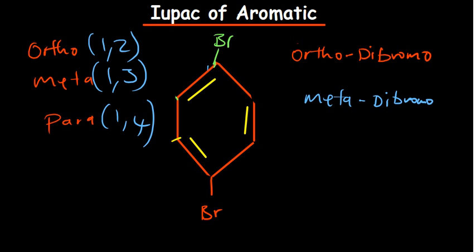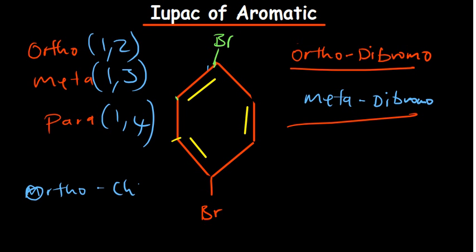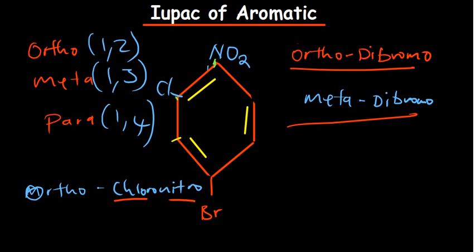This is a special naming system for benzene. When given these names, you need to understand what ortho, meta, and para stand for so you can draw the structures correctly. For example, ortho-chloronitro indicates that chloro and nitro are next to each other in the benzene ring — so you place nitro on one carbon and chloro on the adjacent carbon.